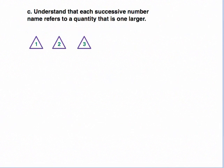Part C states that each successive number name refers to a quantity that is one larger. Starting with 3 and comparing it to 4, we add 1 — that's one larger. Then with 5, we add one more. However, students may not see this clearly because we're just taking the same set and adding one more each time, and they have nothing to compare to.